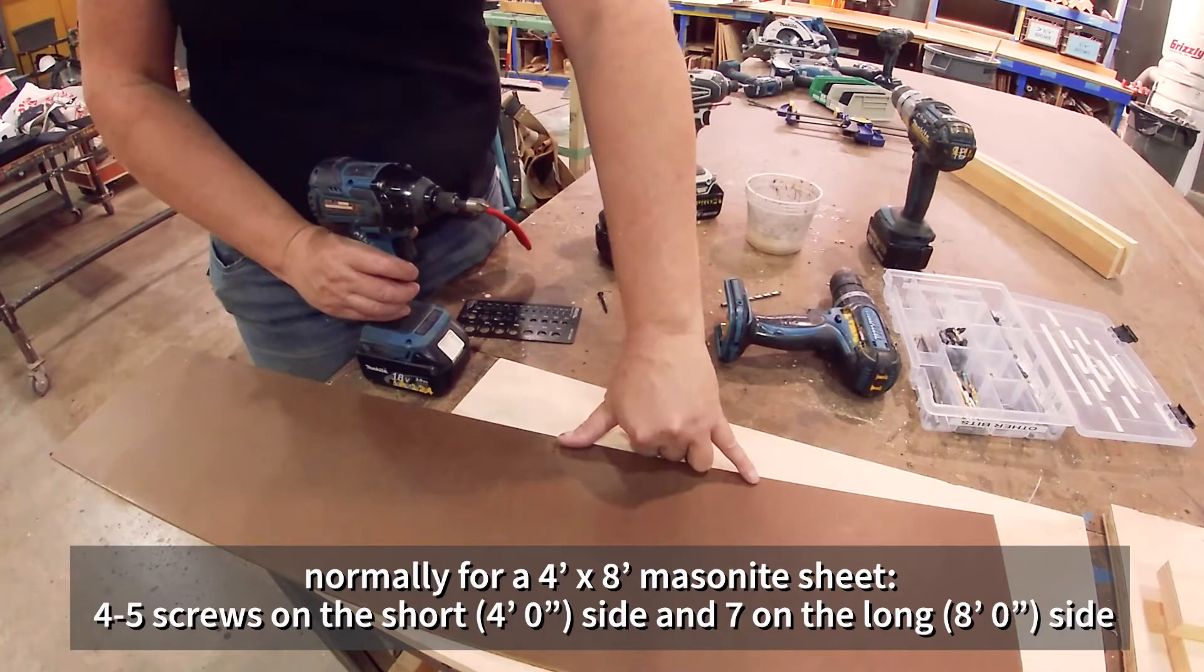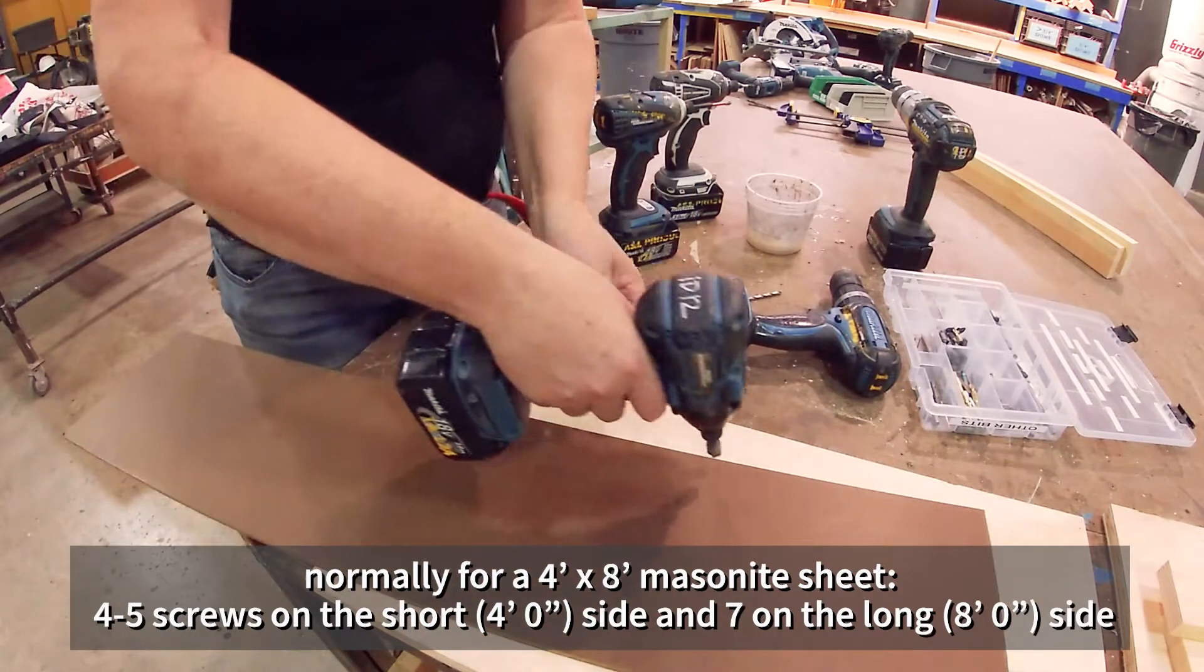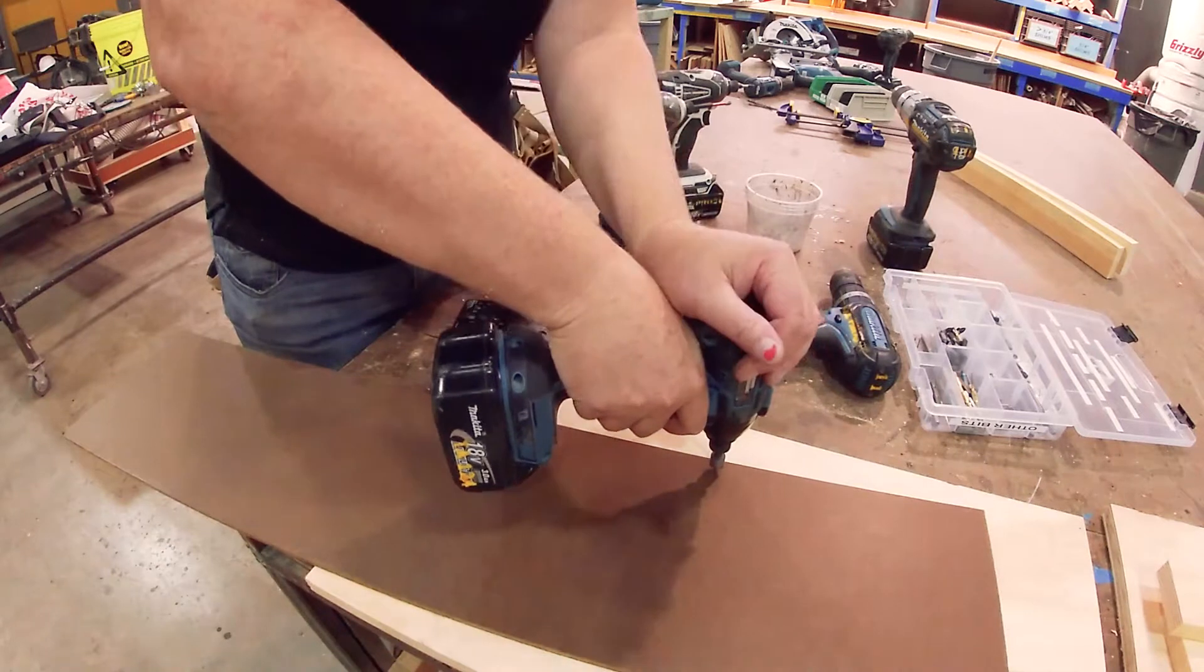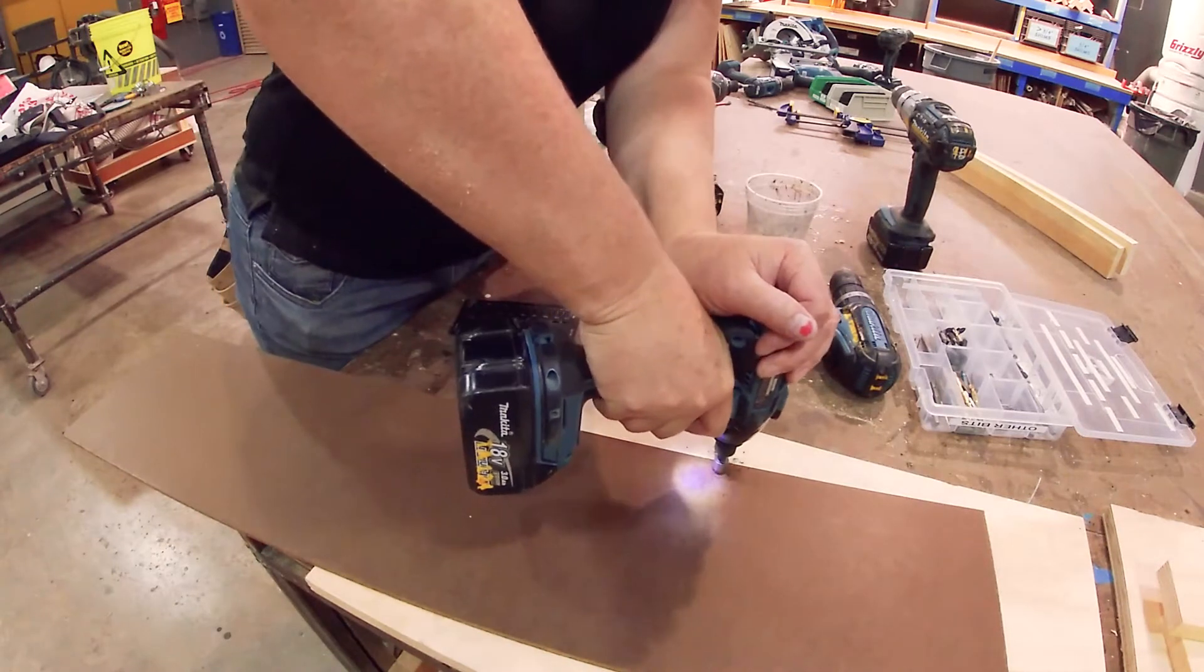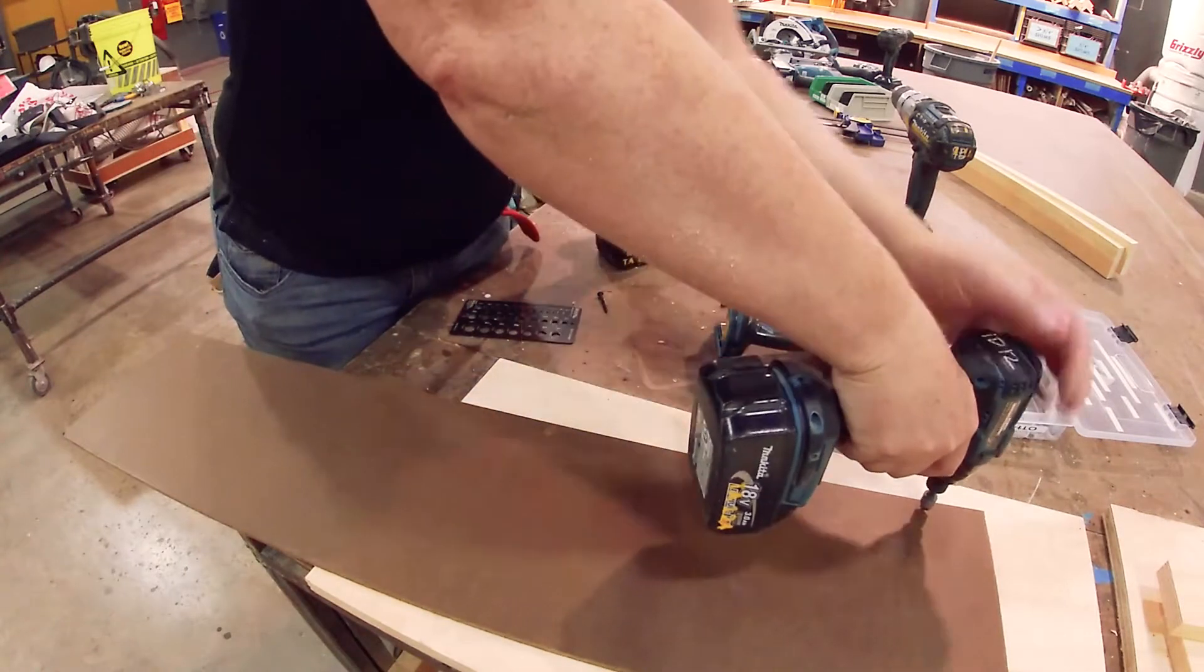But six to eight inches apart is standard for screwing a lid of plywood onto a platform. That's pretty standard for that. So we're just going to do six to eight inches here for the sake of example.